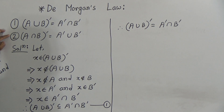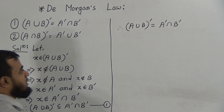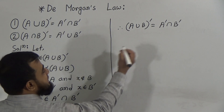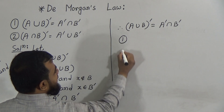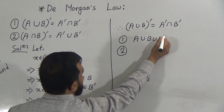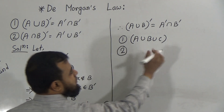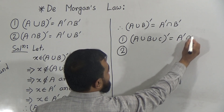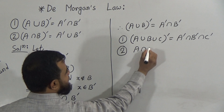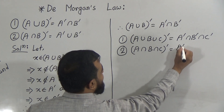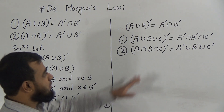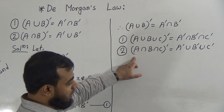Now I am going to prove De Morgan's Extended Formula. The extended formula has two propositions. Proposition one: A union B union C whole prime equals A prime intersection B prime intersection C prime. Proposition two: A intersection B intersection C whole prime equals A prime union B prime union C prime. Here I will prove number two, and you will prove number one.